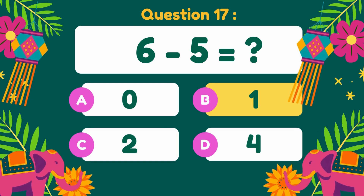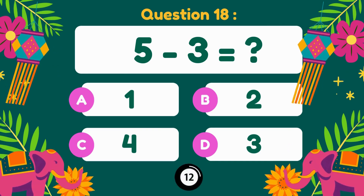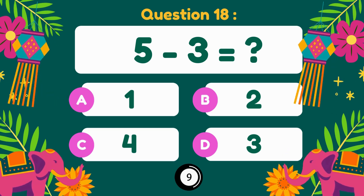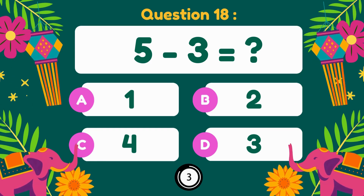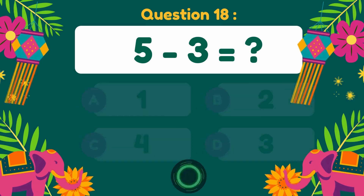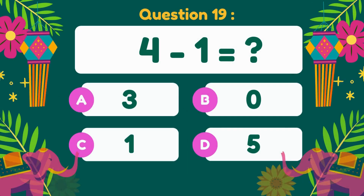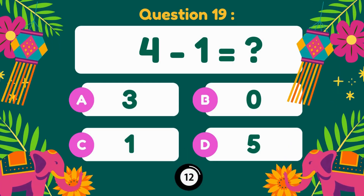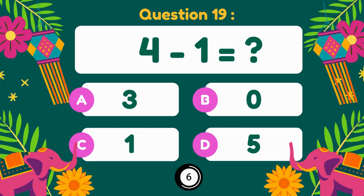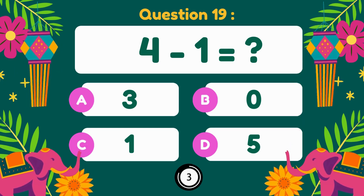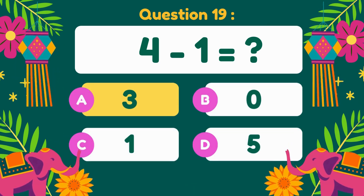6 minus 5 is 1. 5 minus 3. 5 minus 3 equals 2. 4 minus 1 equals 3.